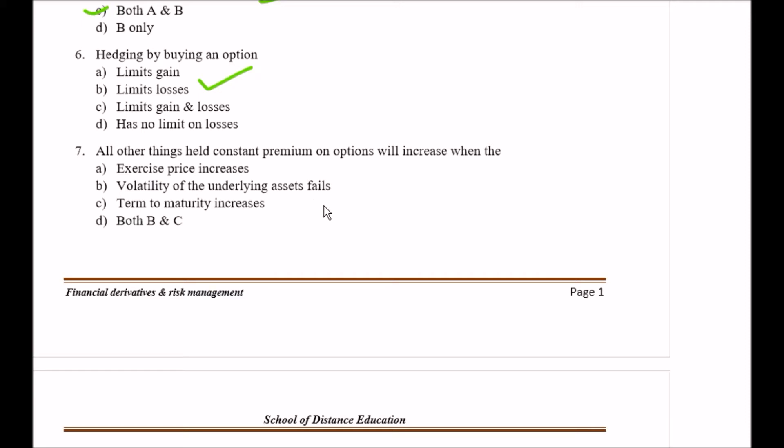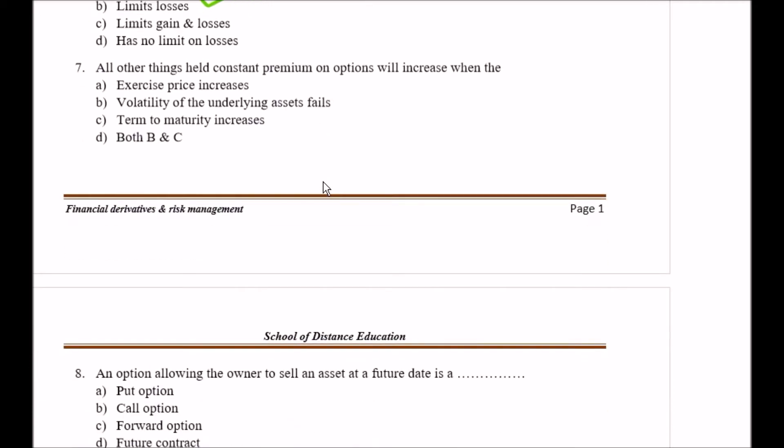Question number seven: All other things held constant, premium on option will increase when the Option A exercise price increases, Option B volatility of the underlying asset fails, Option C term of maturity increase, Option D both B and C.